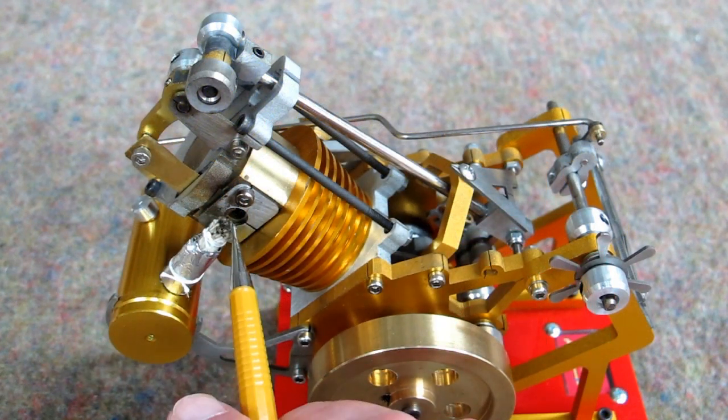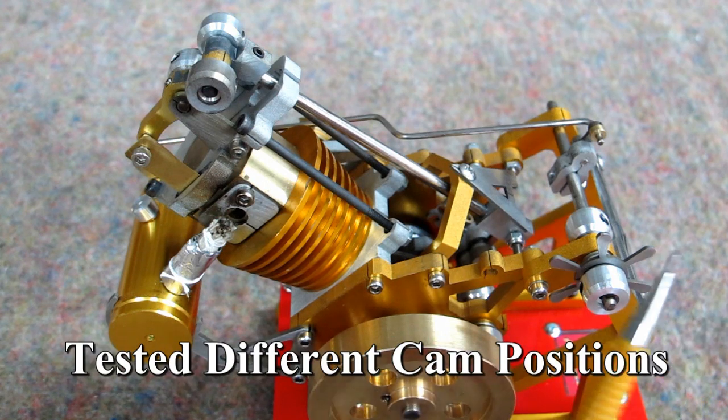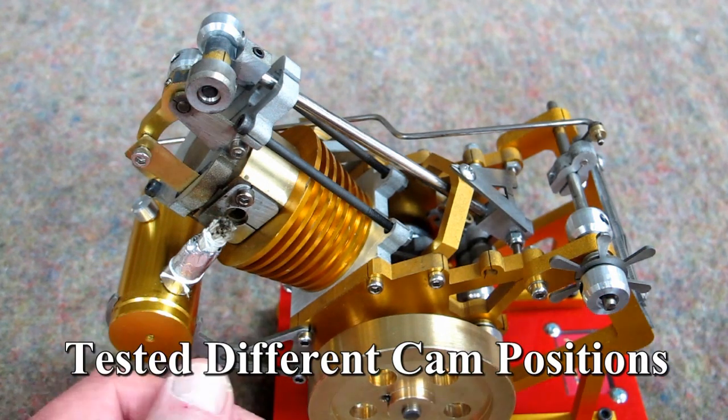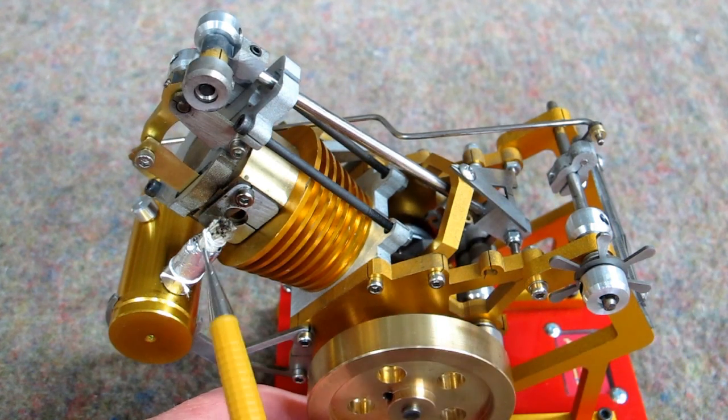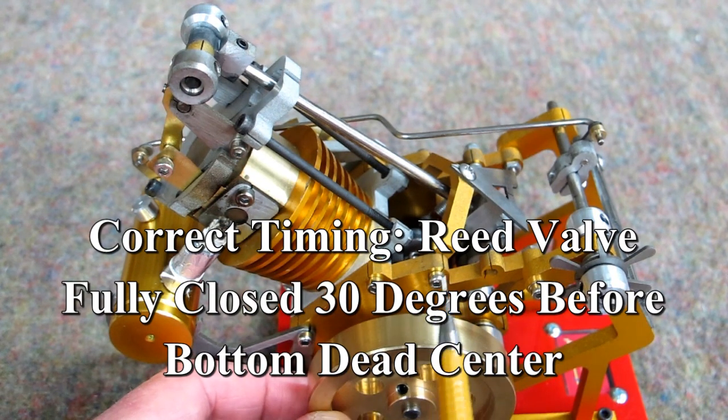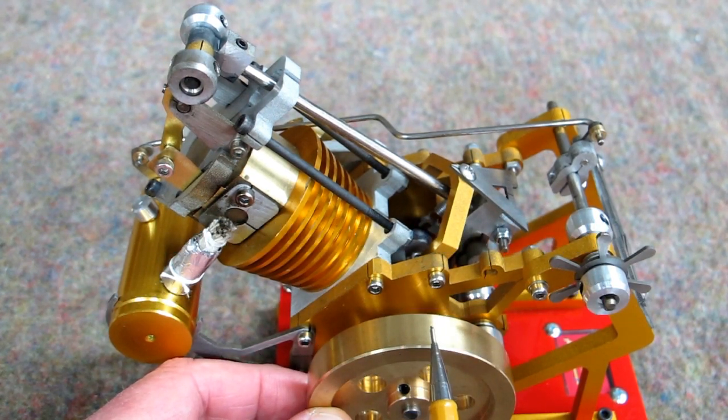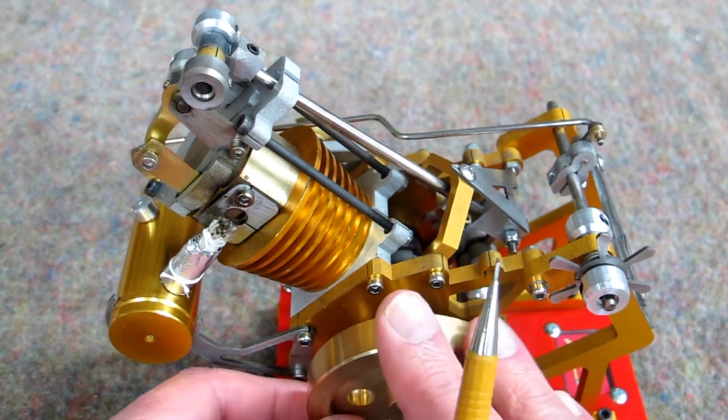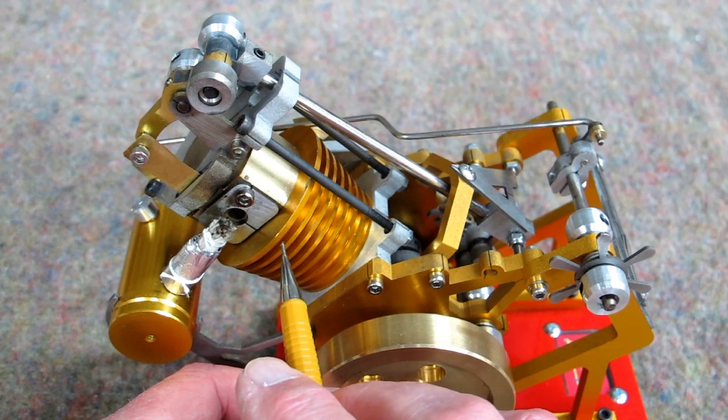When I got this, this thing was backfiring and spitting and popping and carrying on. And I tried about 15, 20 different positions. The best one I have found is this reed valve will be completely closed when the crankshaft is 30 degrees before bottom dead center. And due to the cam design, it will automatically be fully open before the piston gets all the way up.